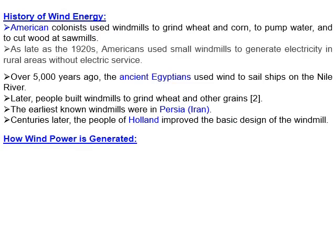The history of wind energy goes back about 5,000 years. People in Egypt, Persia, and Iraq used it for sailing on rivers and for grinding wheat and other grains. Holland also developed windmill technology. Going back to the 1920s, American colonists used small wind turbines in rural areas to generate electricity.